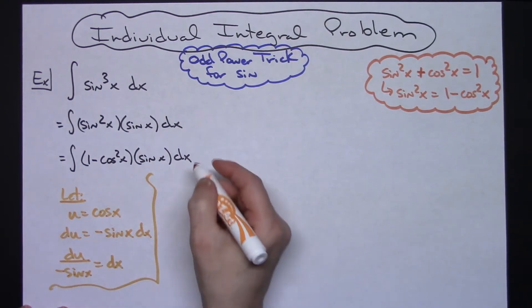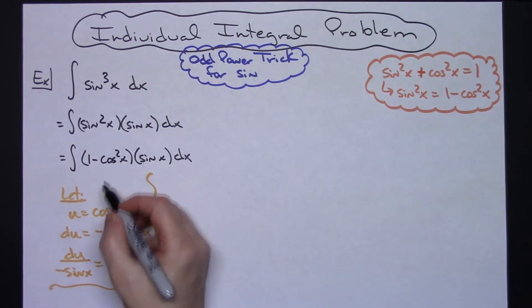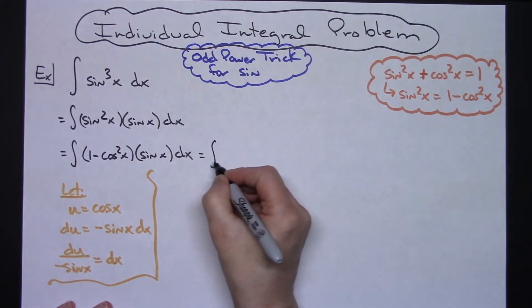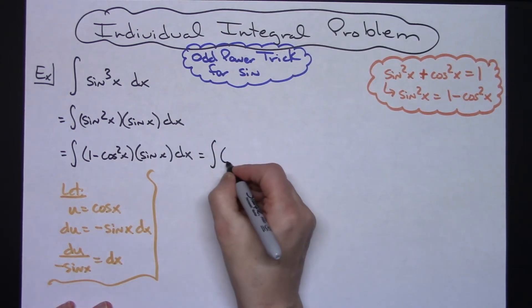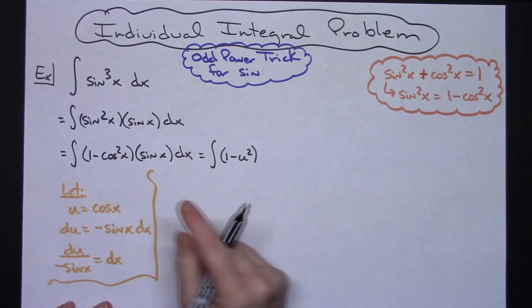There's my u substitution. Now I'm going to come up here and substitute and change this integral out. I'm going to have the integral of, my u was cosine, so I'll have 1 minus u squared because that was cosine squared right there.